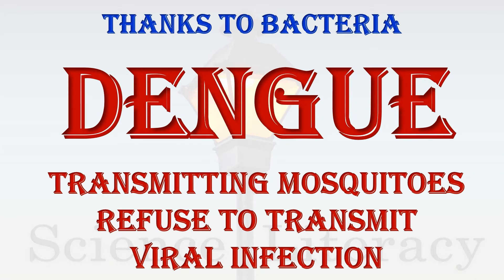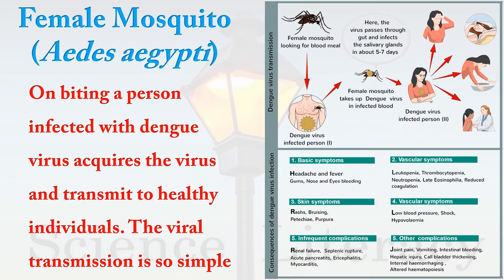Dengue virus infection has been a significant problem. A biological control of dengue has been developed through which dengue-transmitting mosquitoes will lose their characteristics to transmit the virus. Let us find out how. First, we need to understand how a mosquito transmits dengue viral infection.